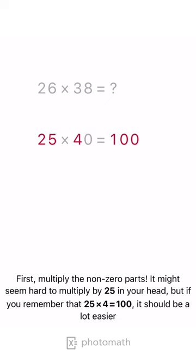First, multiply the non-zero parts. It might seem hard to multiply by 25 in your head. But if you remember that 25 times 4 equals 100, it should be a lot easier.